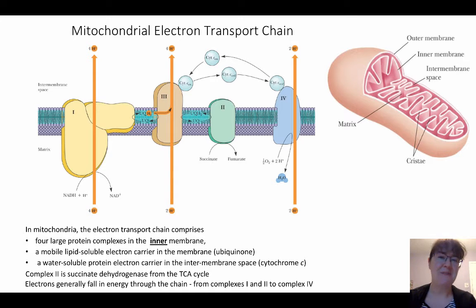Complex two will be familiar to you since it is succinate dehydrogenase from the TCA cycle. We're going to take a look at how these electrons actually flow because it's not going to go just from one to two to three to four. It's going to be a little bit more complicated than that.